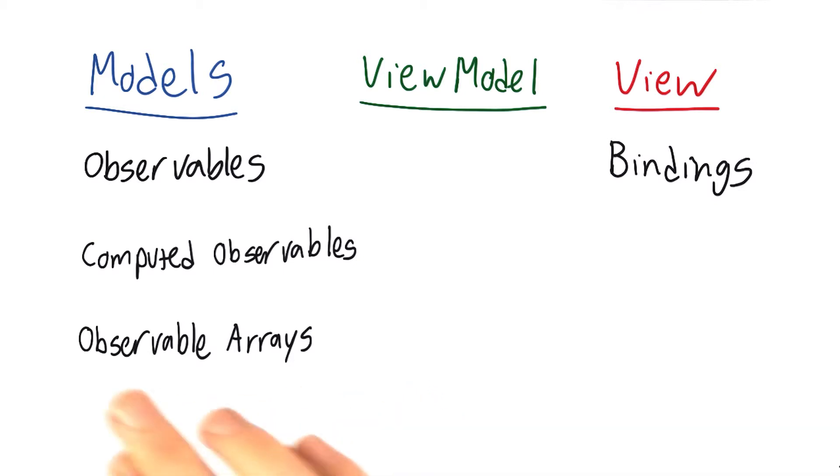Our observable arrays are very similar to observables. We want to use those whenever we have repeating elements, such as multiple cats. Then if you add a cat or remove a cat, Knockout will know which one changed, and it'll re-render the view automatically.